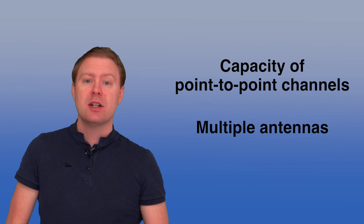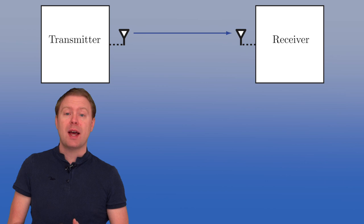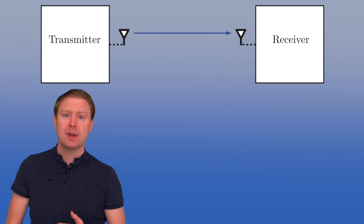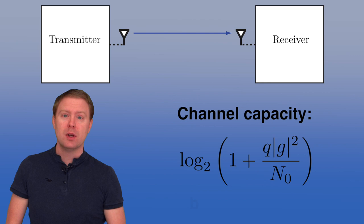In this video I will talk about the capacity of point-to-point channels with multiple antennas, in particular channels called SIMO and MISO channels. In my previous videos I have been talking about a system where you have one transmit antenna that transmits to a receive antenna at another location. This is called a single input, single output channel, and we have characterized the capacity, which is log2 of 1 plus the signal-to-noise ratio, measured in bits per symbol.